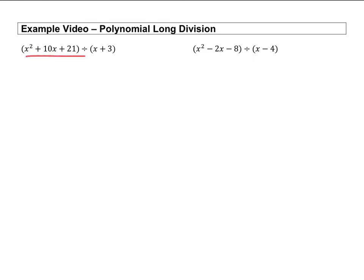So what you're dividing by is going to go out in front. There we go, x plus 3, and then on the inside is going to be that x squared plus 10x.